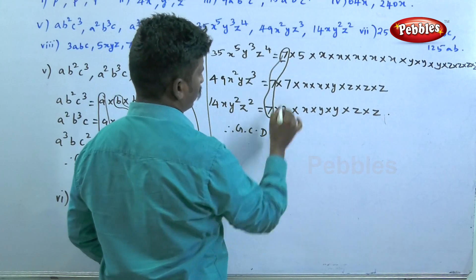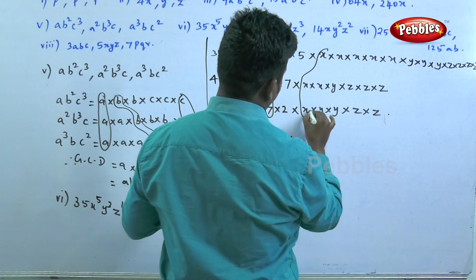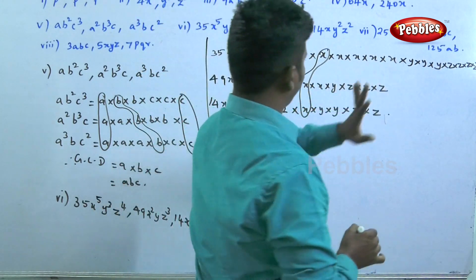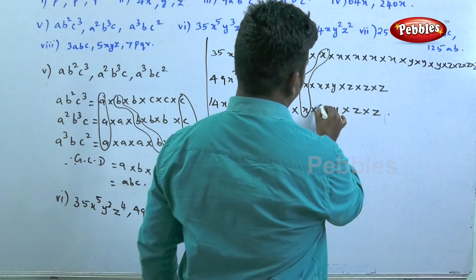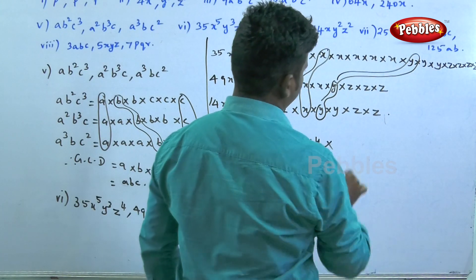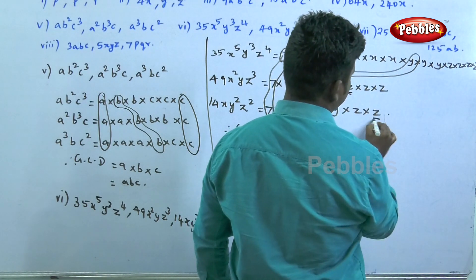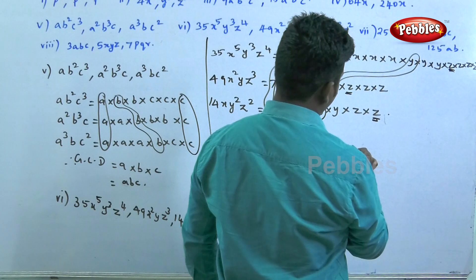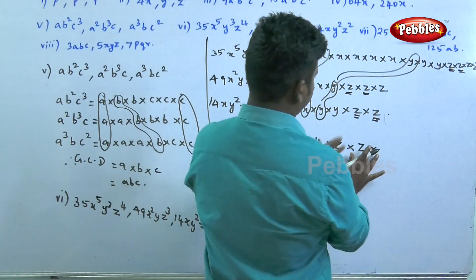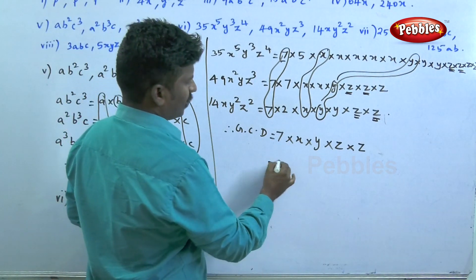The common numerical factor is 7. For x: the minimum is x (one x, from the third expression). For y: y is common in all (minimum power is 1). For z: z² is common. Therefore the GCD is 7xyz².